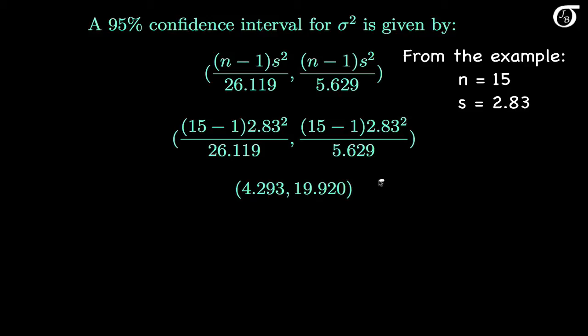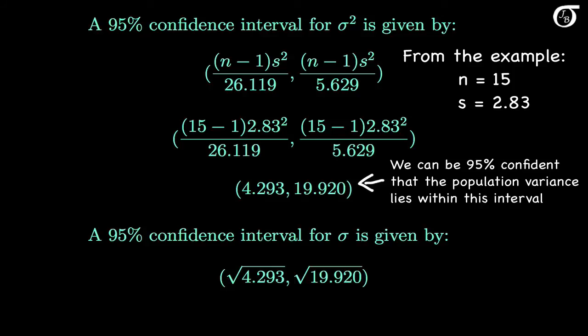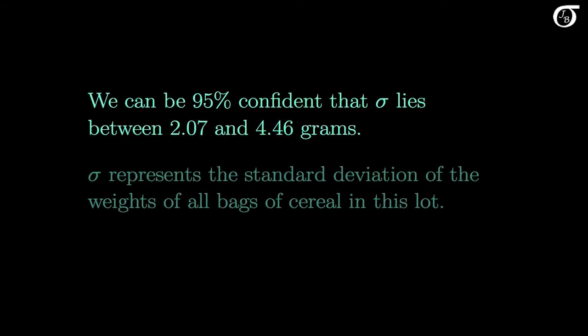This is an interval for sigma-squared, so we can be 95% confident that the population variance sigma-squared lies within this interval. It's often a little more intuitive to express this in terms of the standard deviation, which is just the square root of the variance. If this is a 95% confidence interval for sigma-squared, then a 95% confidence interval for sigma results from taking the square roots of those two endpoints. This works out to 2.07 to 4.46 — so we can be 95% confident that sigma, the population standard deviation, lies between 2.07 grams and 4.46 grams.